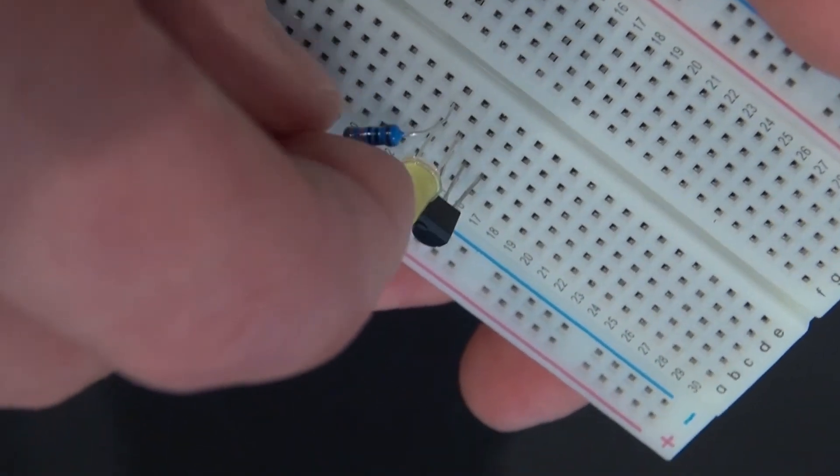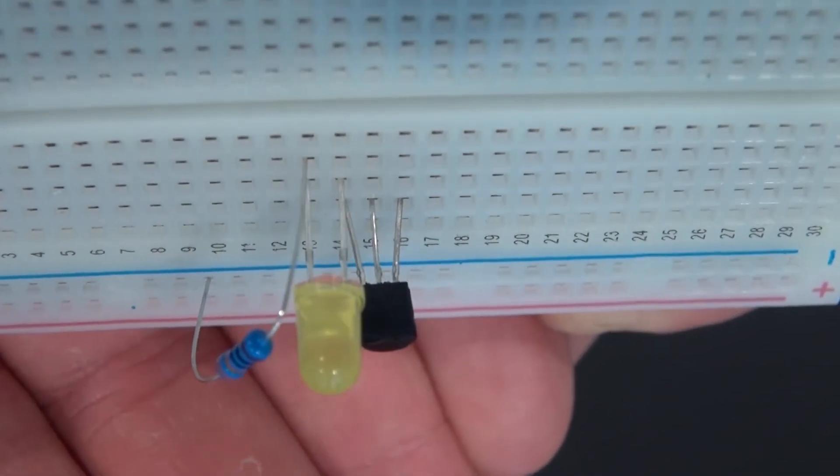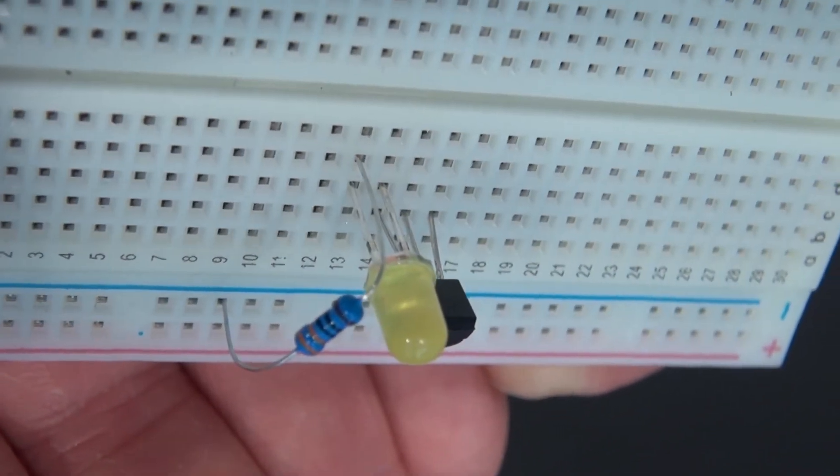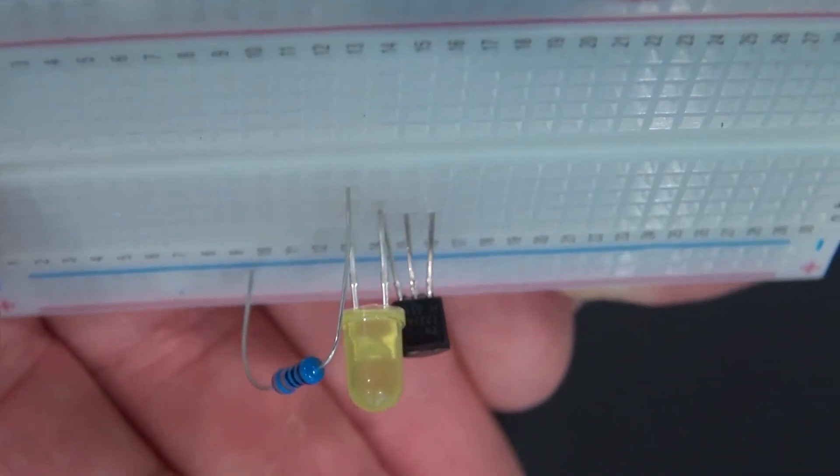Now take your 330 ohm resistor and connect it to the cathode of the LED and connect it to the negative rail of your breadboard.